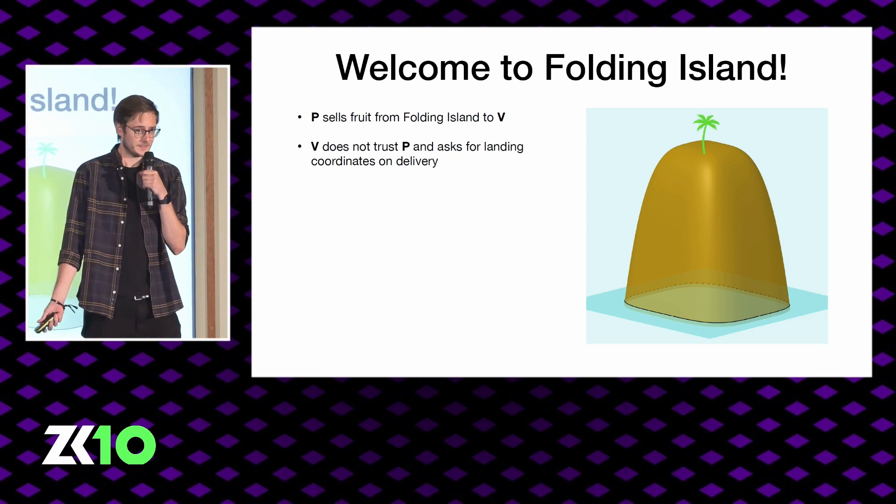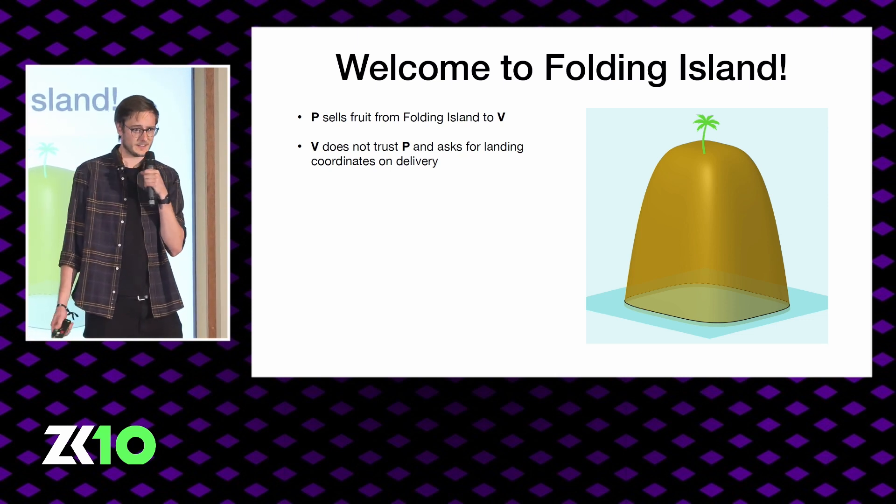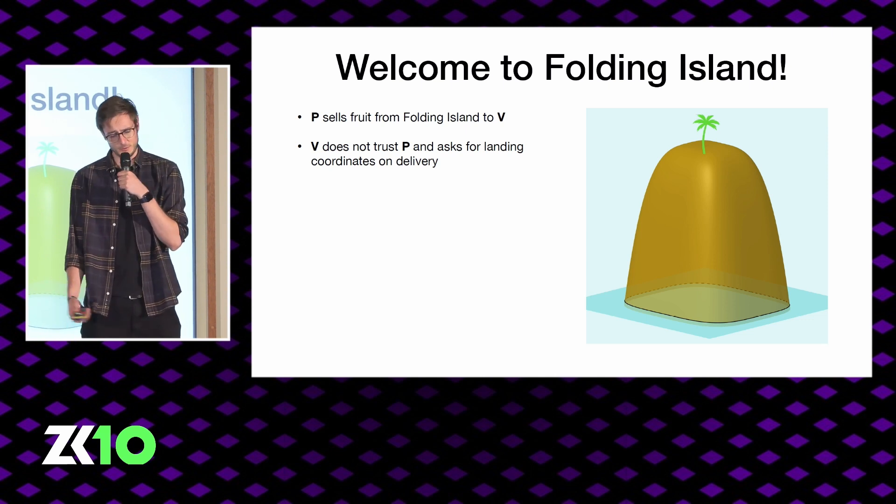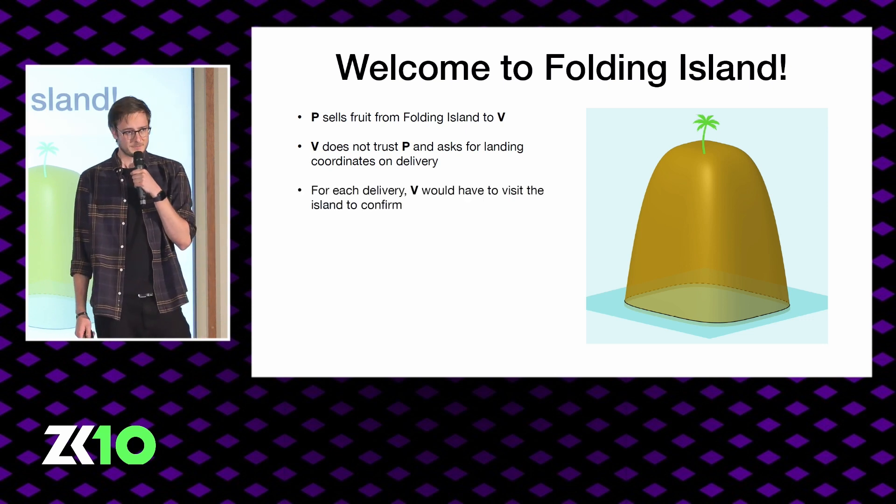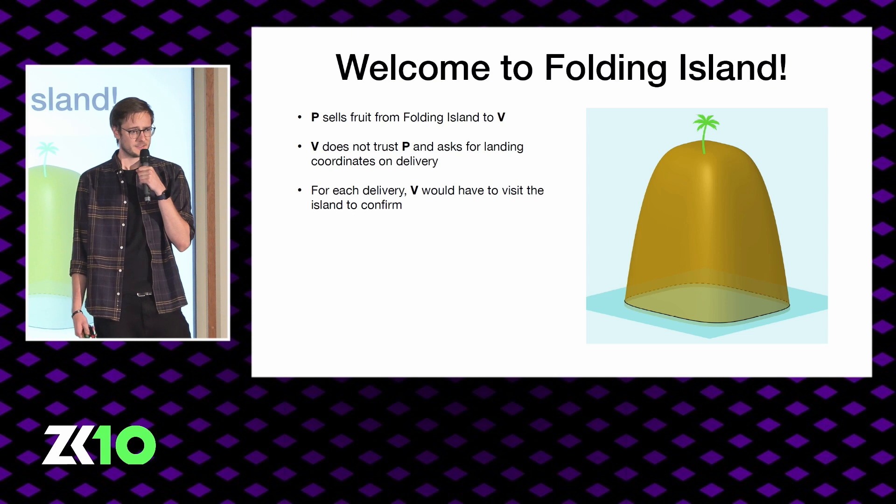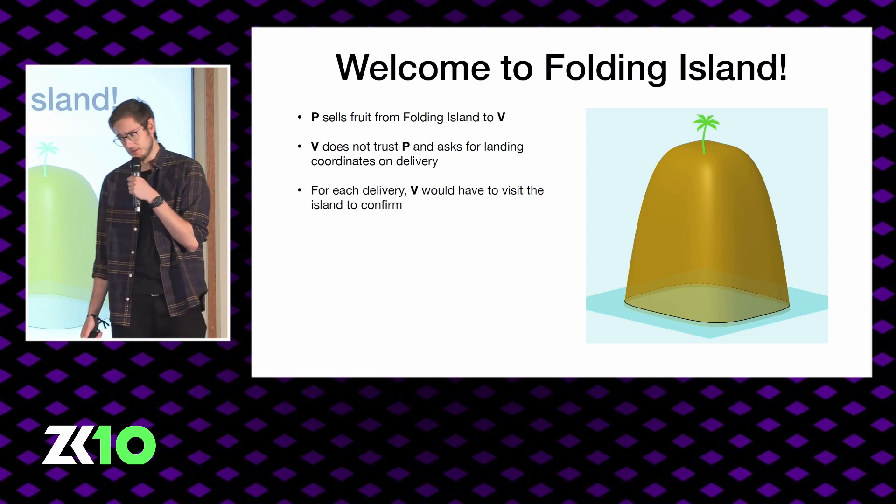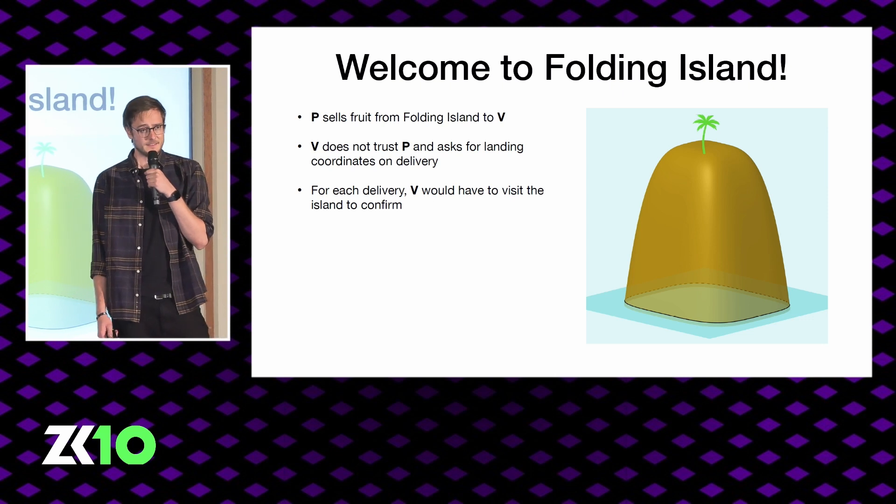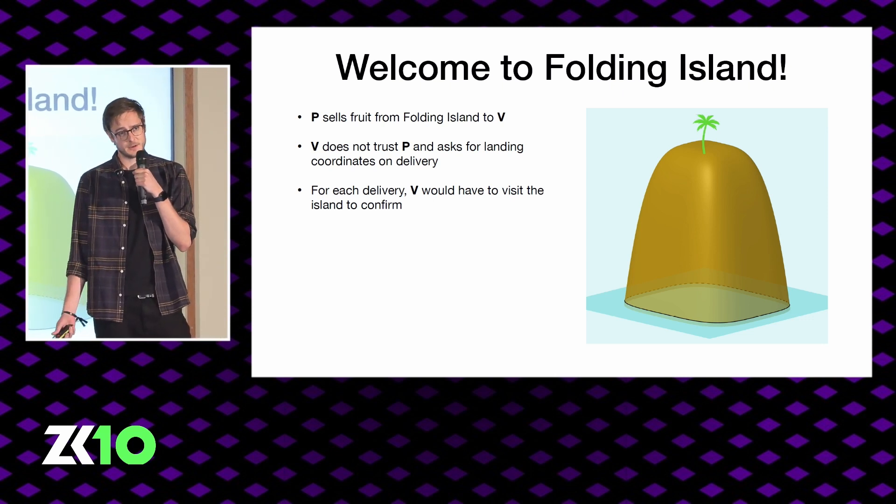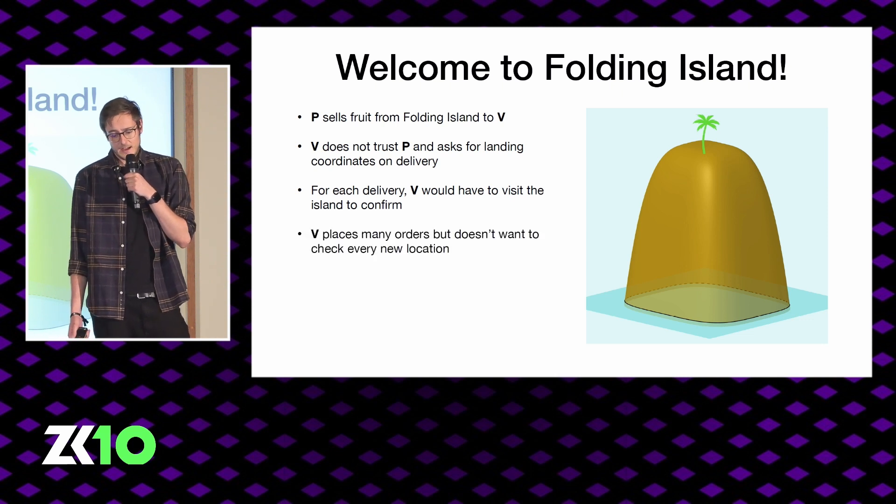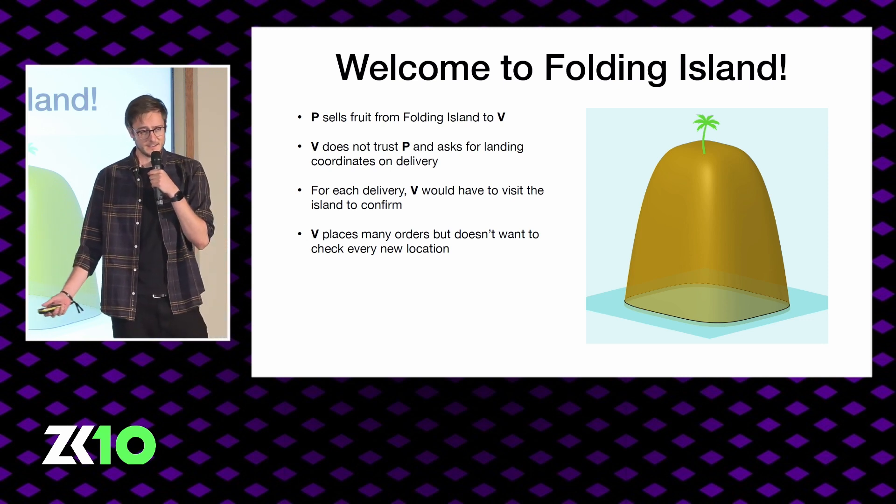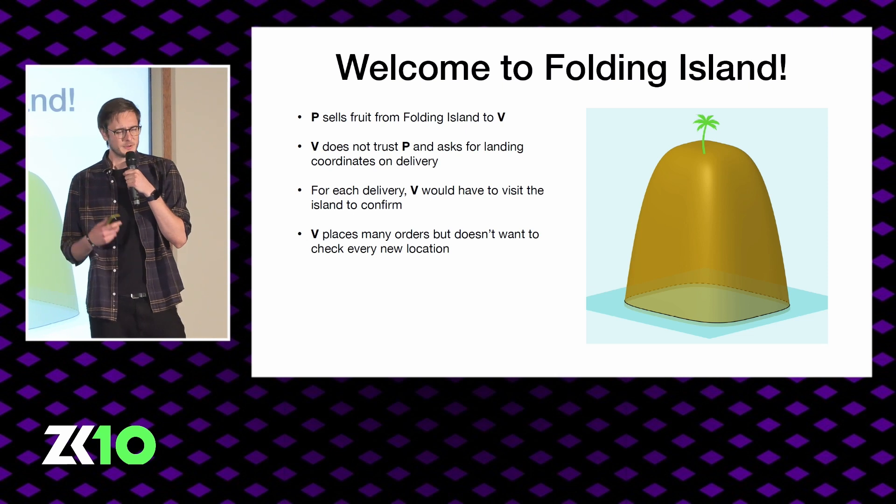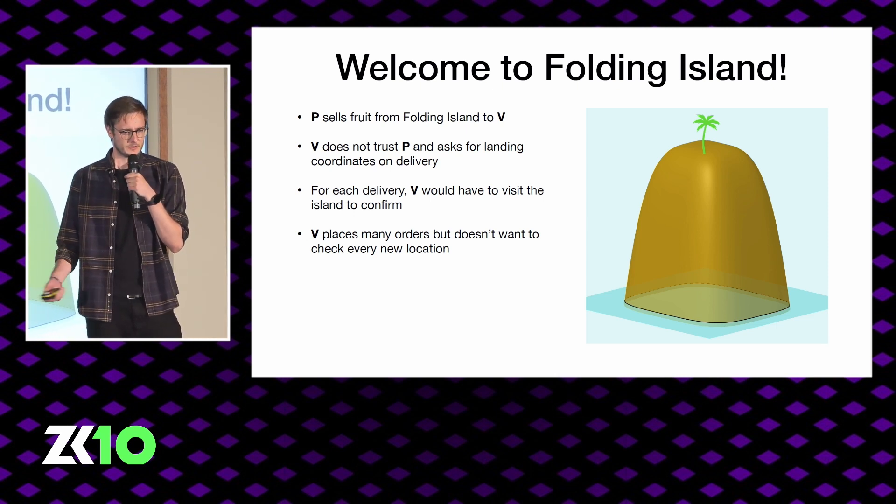Obviously the verifier doesn't really trust the prover. So he wants to make sure the fruit he's getting is actually from this island and not some counterfeit or old fruit. So he asks the prover to tell him the exact GPS coordinates of where he landed on this island. But if the verifier actually wanted to check this, he would actually have to visit the island. And if they're going there anyway, they might as well just pick the fruit themselves. This makes even less sense when the verifier is placing many orders. So we want to come up with a better system so that everybody's happy at the end.